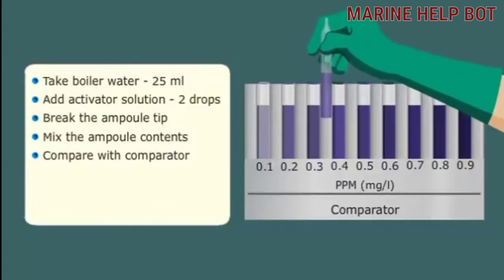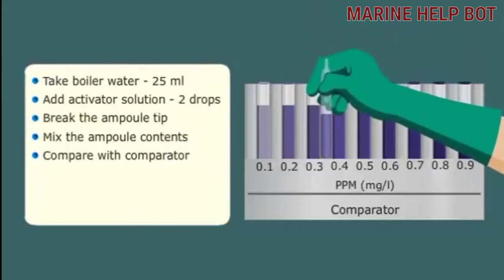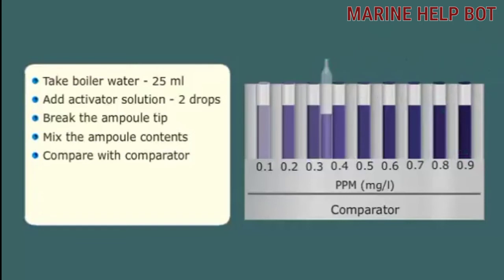Place the filled ampoule inside the comparator. The dissolved oxygen content is given by the marking on the matching tube.